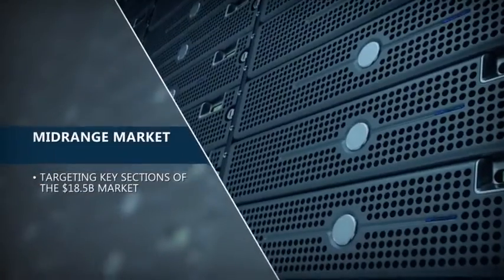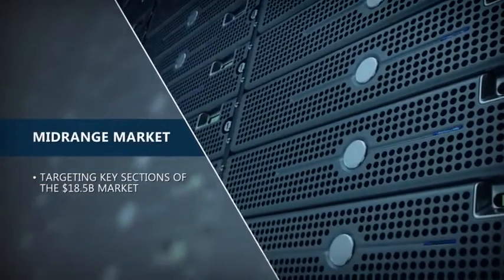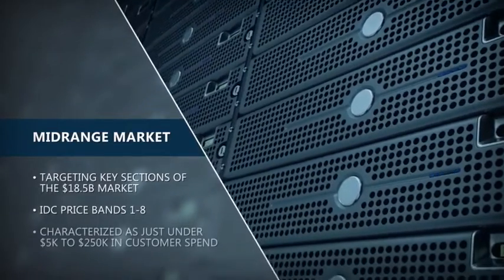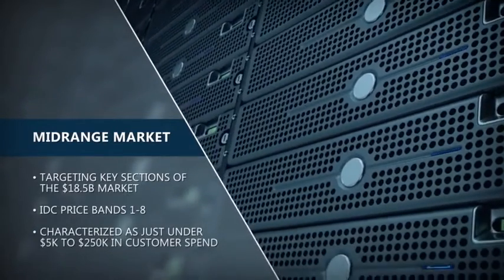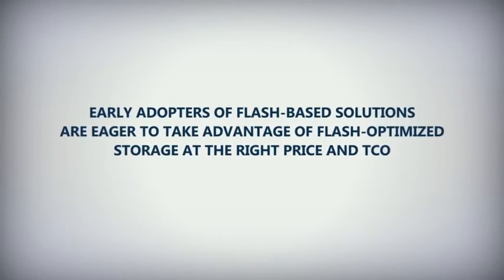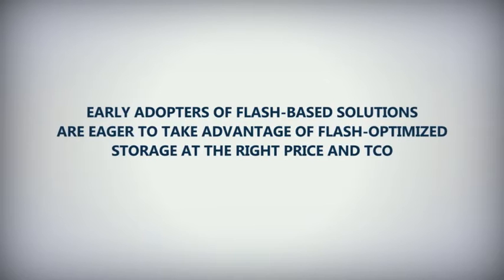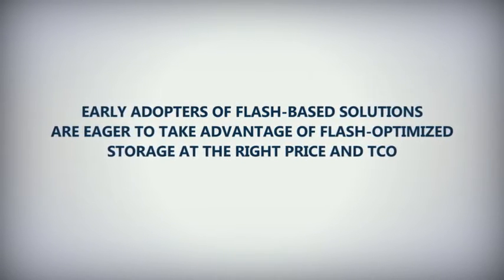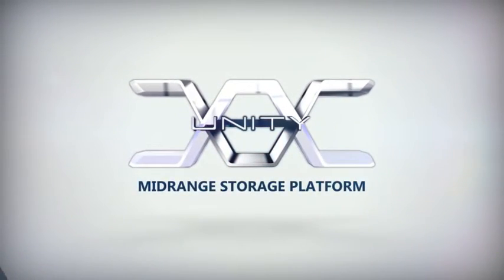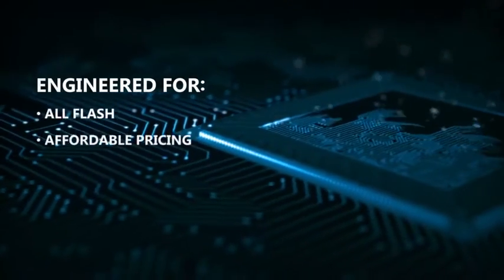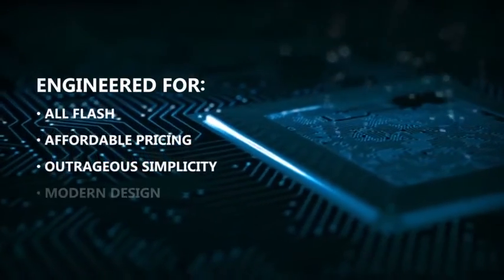We are targeting key sections of the $18.5 billion market. In particular, IDC price spans 1 through 8, characterized as just under $5,000 to $250,000 in customer spend, have generally been early adopters of flash-based solutions and are eager to take advantage of flash-optimized storage at the right price and TCO. It's within this context that EMC introduces Unity, a mid-range storage platform engineered for all-flash, affordable pricing, outrageous simplicity, and modern design.